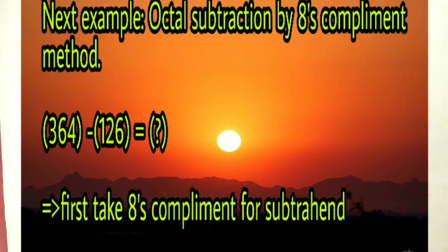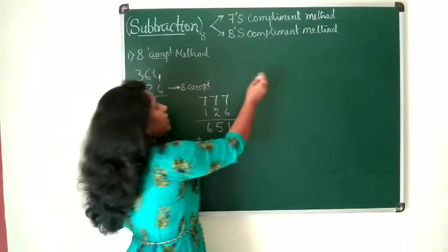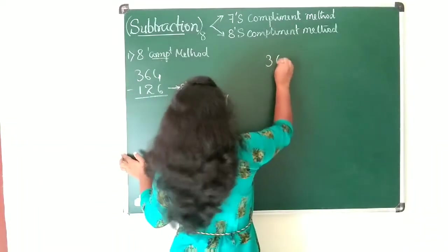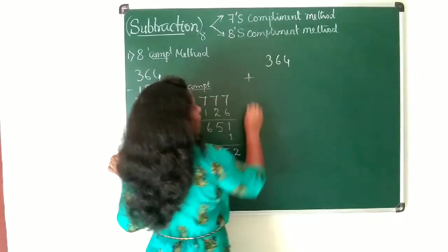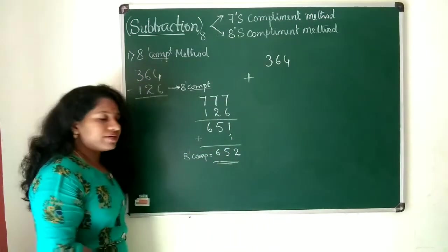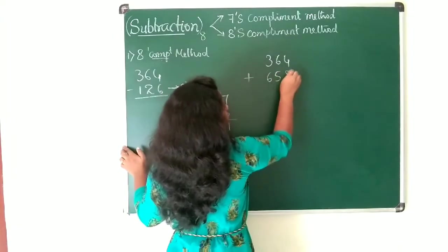Let's take next example. Octal subtraction by 8's complement method is 364 minus 126. First take 8's complement for subtrahend. Next what you need to do? You need to write the minuend as it is: 364. And then add this 8's complemented value: 652.